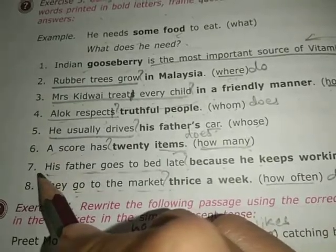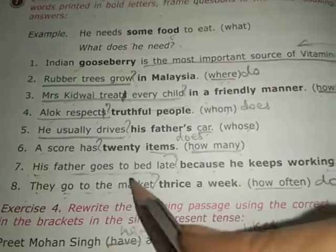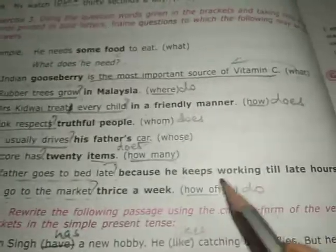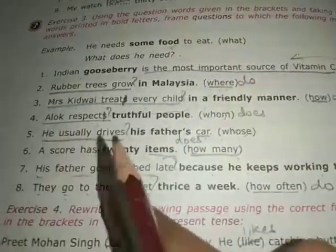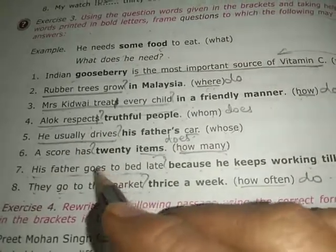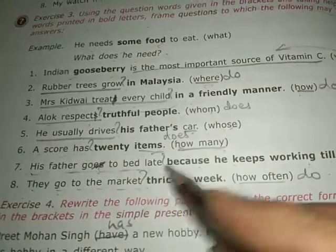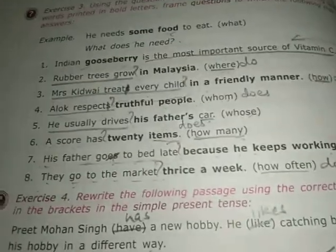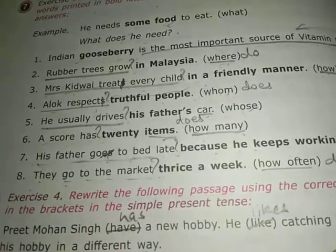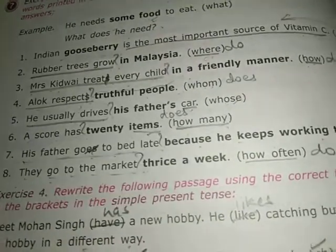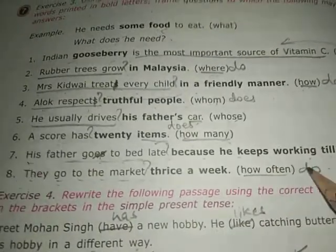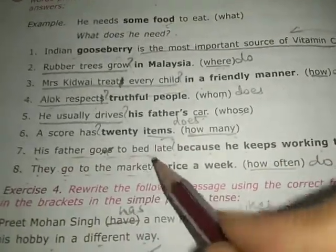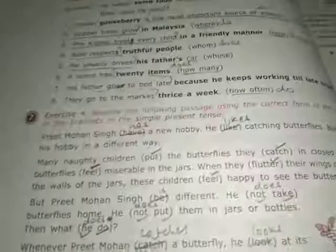Number seven: his father goes to bed late because he keeps working till late hours — using 'why': why does his father go to bed late? 'Goes' becomes 'go' in the question. Number eight: they go to the market thrice a week — using 'how often': how often do they go to the market?